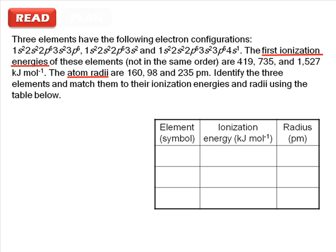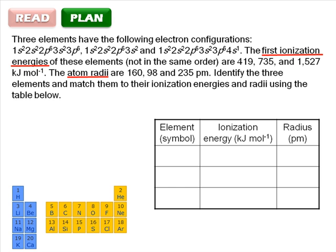As always, in planning an answer involving electron configurations, you should consult your periodic table. Here's a chopped off version that will meet our needs. We can work out the atomic number, and hence the element identity, from the total number of electrons, because we're dealing with neutral atoms.